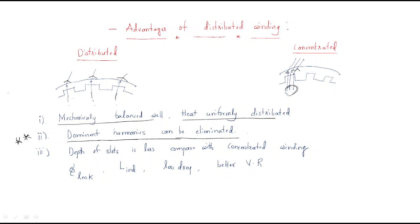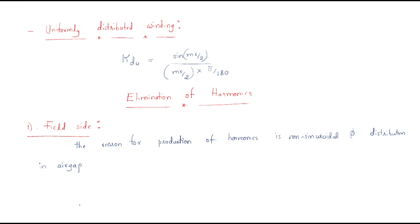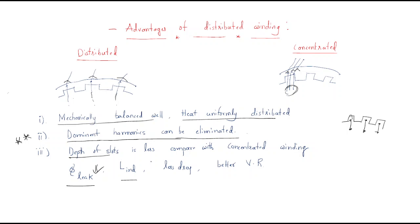Third point: the depth of slots is less compared to the concentrated winding. Generally, slots are designed with some depth, but in the case of concentrated winding it has less depth. With less depth of slots, the leakage flux value is less and the inductance value is also less, resulting in less voltage drop. Therefore, voltage regulation will be improved — that means less voltage drop is possible with distributed winding.